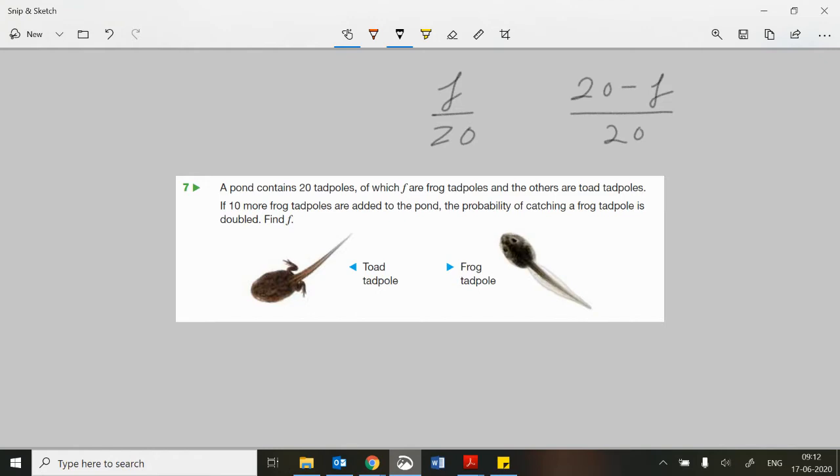So if 10 more are added to now, we don't have F, we have F plus 10. But our probability of picking out a frog one now becomes out of not 20 anymore, but out of 30. So now 10 more tadpoles in the pool in total.